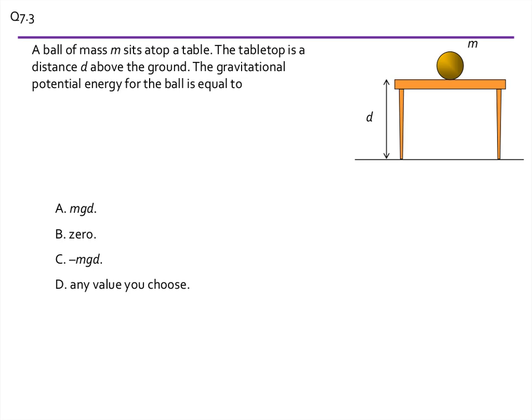All right, so this question has to do with the idea that when we write the potential energy function of gravity, we get to choose our reference point. We get to choose where y is zero. Because the reason for this is because what really matters is not the individual value of potential energy, but how it changes.